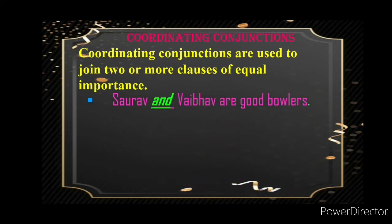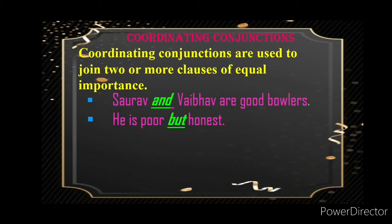Examples: Saurav and Bevav are good ballers. 'And' is used to join words, phrases, clauses or sentences that are similar in meaning. Another example: He is poor but honest. 'But' is used to join words, phrases, clauses or sentences that show contrast.